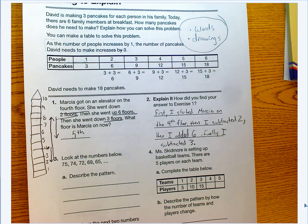Okay, so number one says, Marsha got on an elevator on the fourth floor. She went down two floors, then she went up six floors, then she went down three floors. What floor is Marsha on now?